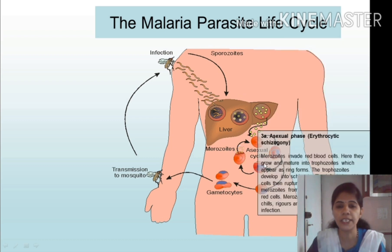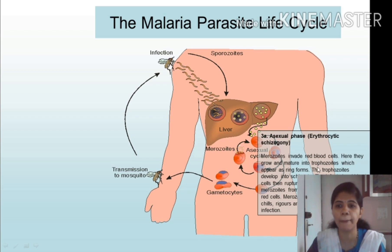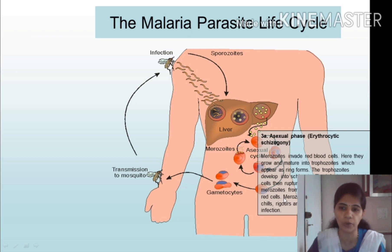After completion of many cycles in the liver, the merozoites invade red blood cells, where they grow and mature into trophozoites, which appear as ring forms. The trophozoites develop into schizonts, and the infected red blood cells rupture to release numerous merozoites from the schizont to infect other red blood cells. This phase is known as erythrocytic schizogony.